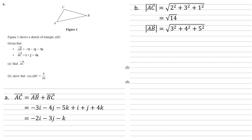The length of AB is the square root of 3 squared plus 4 squared plus 5 squared, which is root 50. And by the same idea, the length of BC is equal to root 18.